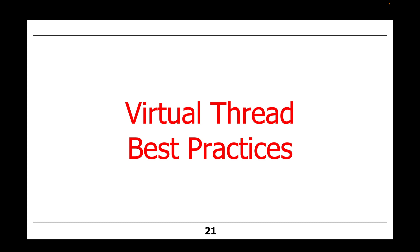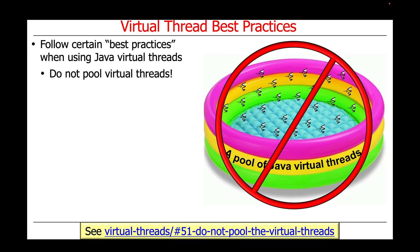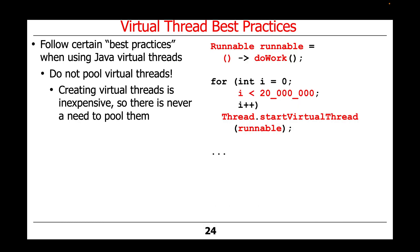We'll now turn our attention to a number of virtual thread best practices you should consider when applying Java virtual threads to your programs. First, don't pool virtual threads — that defeats the whole purpose of using them. Creating virtual threads is inexpensive, so there's really never a need to pool them. For example, if you want to create 20 million virtual threads, you can simply create 20 million virtual threads rather than trying to pool a smaller number and reuse them.